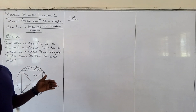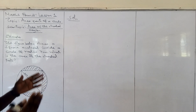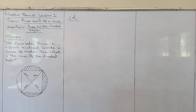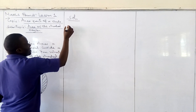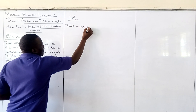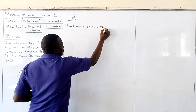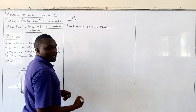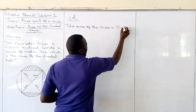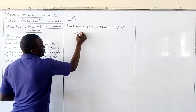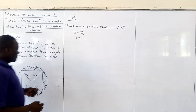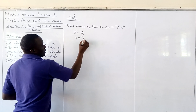I want us to do it together as you follow and learn. The easiest thing to start from is finding the area of the circle. The area of the circle is always given by π r squared. Pi is 22 over 7, and the radius is given as 7 cm.